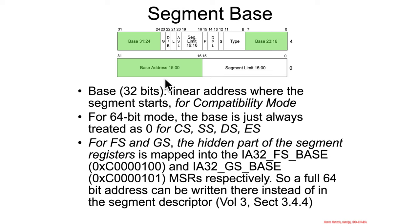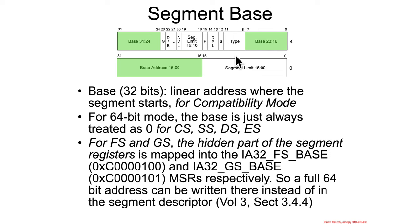Writing to a segment register causes it to look up some entry in the table. These are what those entries look like, and that loads data from these tables into the hidden portion of the segment register. But CS, SS, DS, and ES are always hard-coded to 0 in their hidden portion — they weren't actually grabbing the base from here. For FS and GS, the 32-bit portion of the base could be pulled from the segment descriptor.